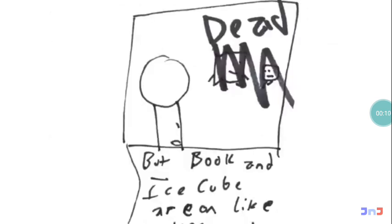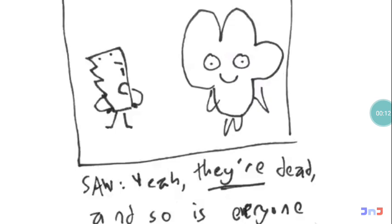But Book and Ice Cube are on different teams now. Also, they're dead. Yeah, they're dead, and so is everyone else on my team. Except Dora.